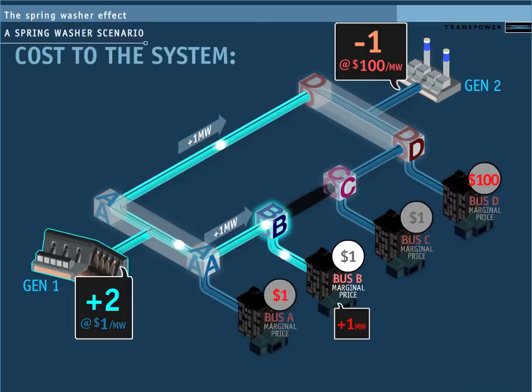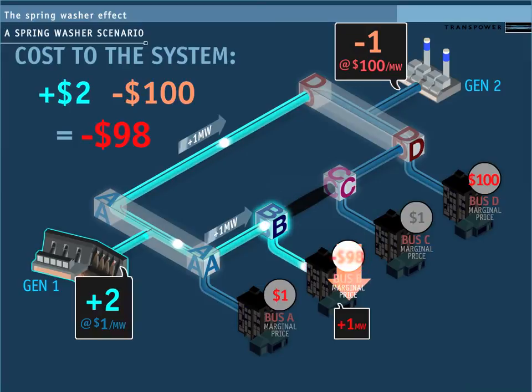So now we can calculate the cost of supplying the next megawatt of load to bus B. It would require 2 megawatts from generator 1 at $1, and it would require generator 2 to back off by 1 megawatt for negative $100. So the final marginal price at bus B would be negative $98.